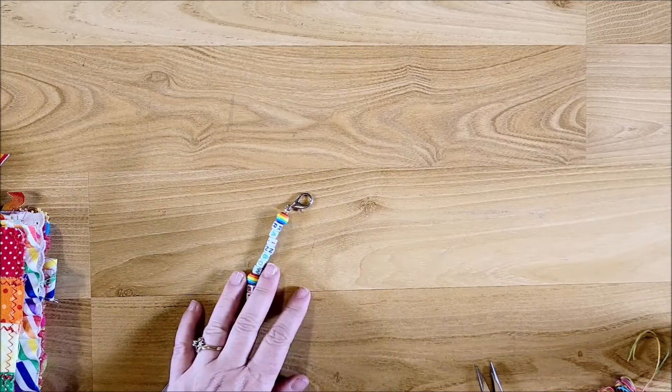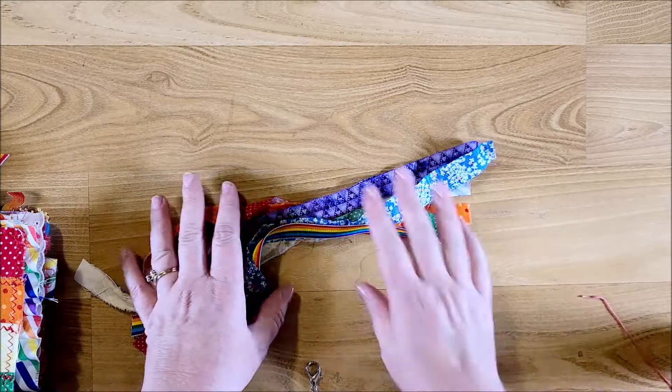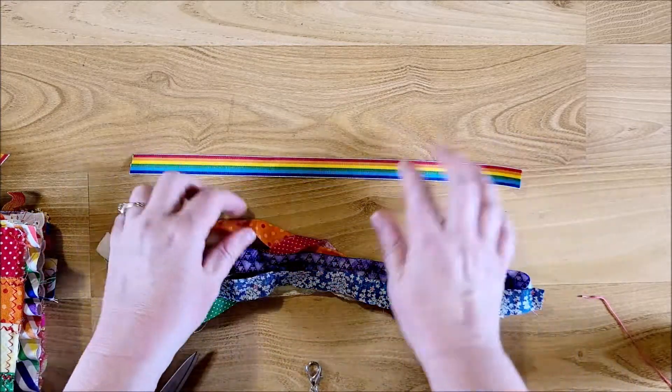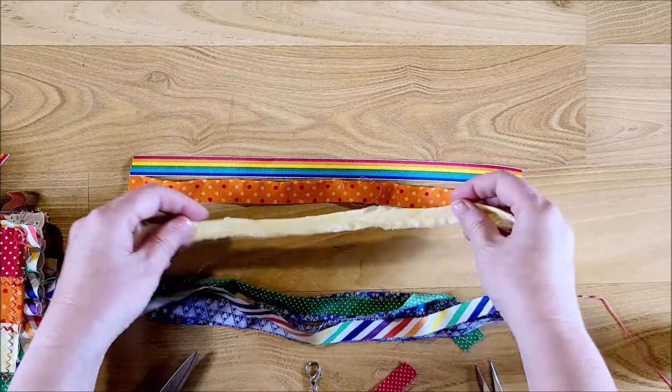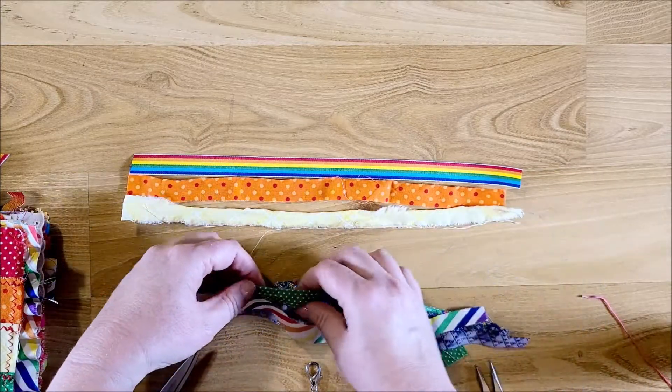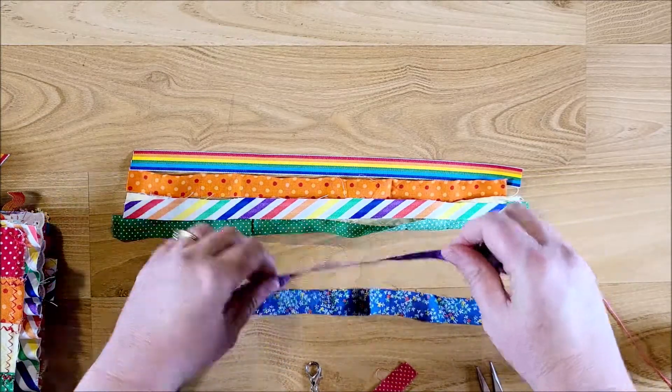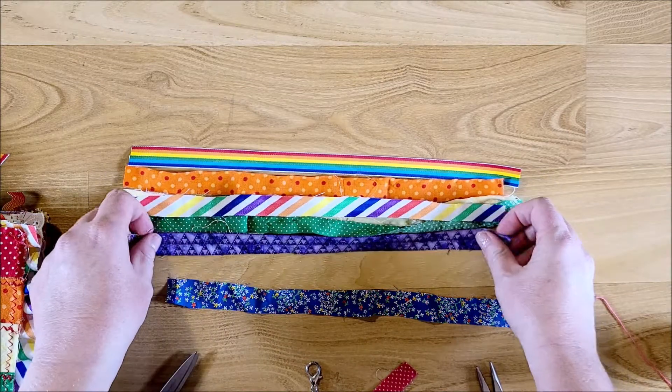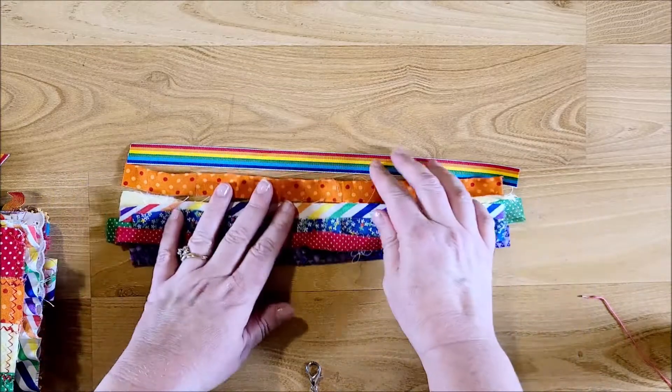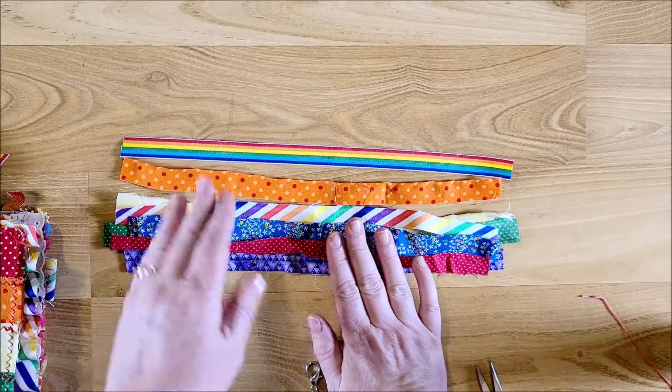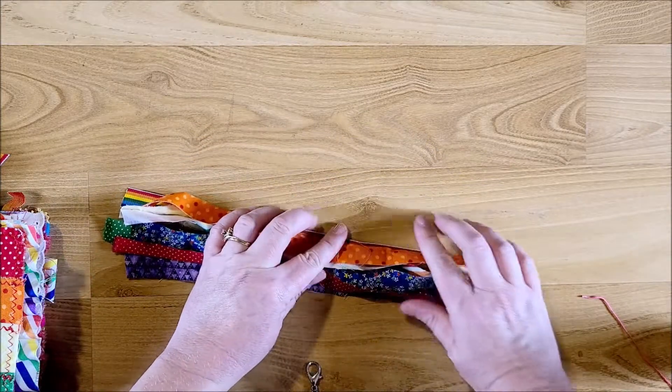Now what we're going to do is make our tassel. And I've made tassels before. This is pretty easy, just a simple tassel. I have one, two, three, four, five, six, seven, eight pieces. One of them is a rainbow ribbon and the rest are the fabrics that I used on my book.